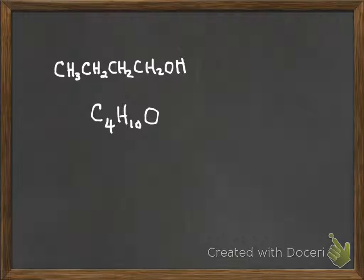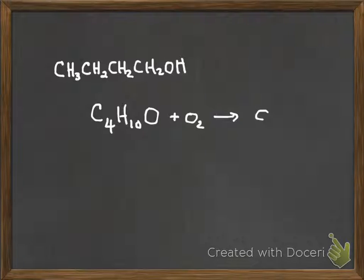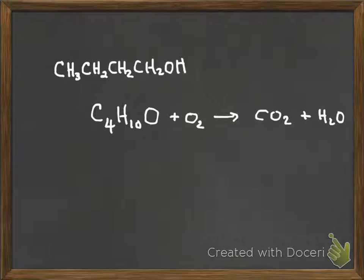Write the balanced combustion reaction for butanol. I just add oxygen to it, and I'm going to get CO₂ and water. Now when you learned to balance equations back in the day, you made a list. But for alcohols, there's a trick — just balance them in the order C, H, and O, and then you don't have to do all the bookkeeping you had to do before.